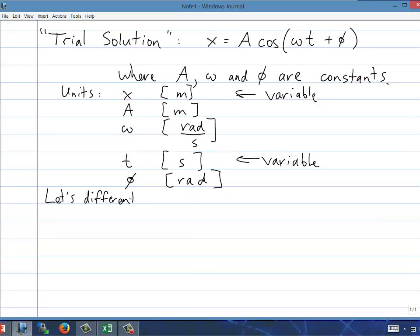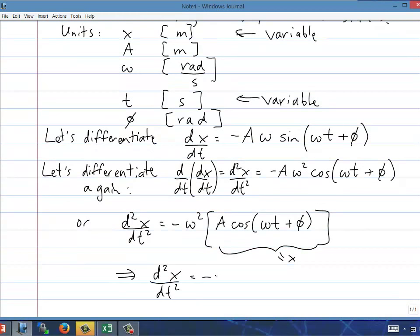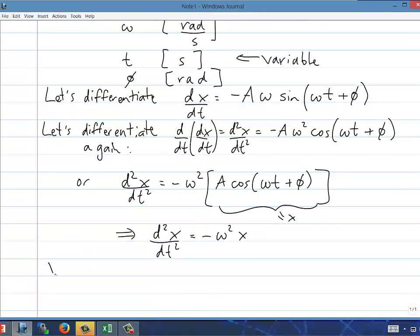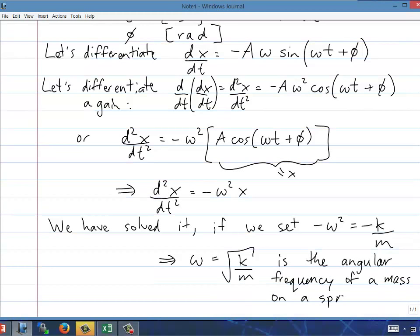So let's differentiate our trial solution. The derivative of cos is negative sine. And the omega comes out in front there. And we can differentiate again. The derivative of sine is positive cos, but we still have the negative sine from before. So it's negative a omega squared times cosine of the same argument. This can be written as negative omega squared times x. So d squared x by dt squared equals negative omega squared times x. We've solved it. As long as this negative omega squared is negative k over m.